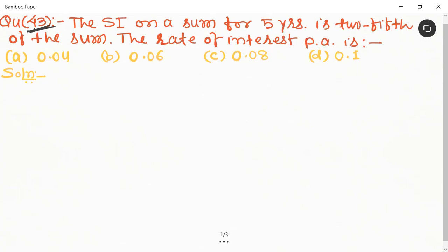Quantitative aptitude chapter, simple interest, question number 43. The simple interest on a sum for five years is two-fifth of the sum. The rate of interest per annum is which option? In this question, simple interest is two-fifth of the sum.